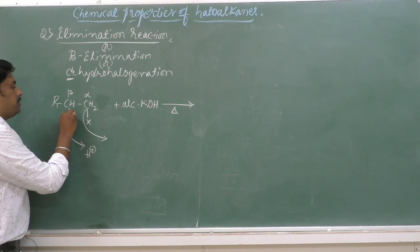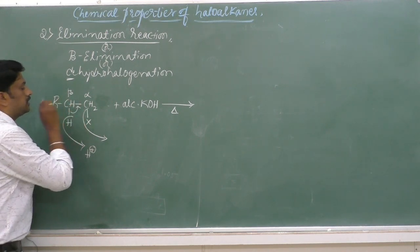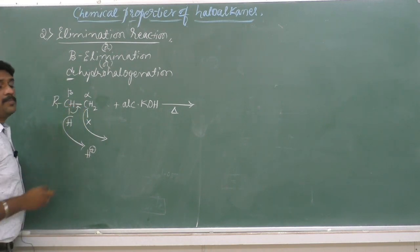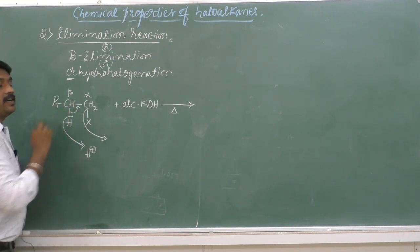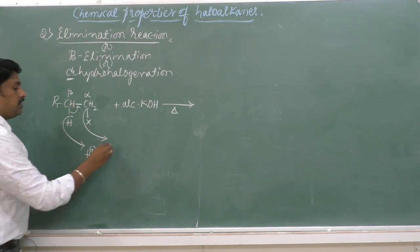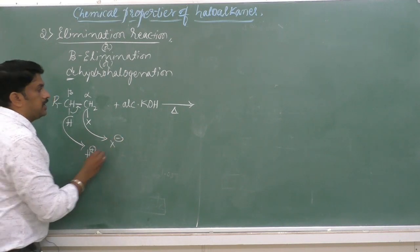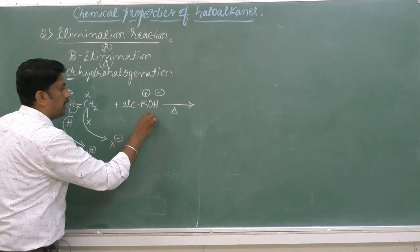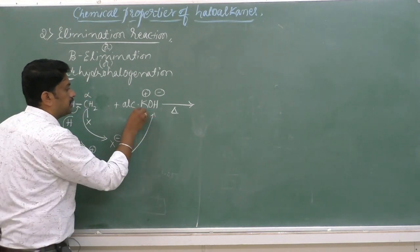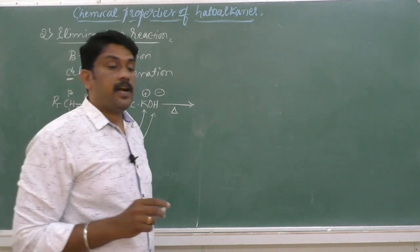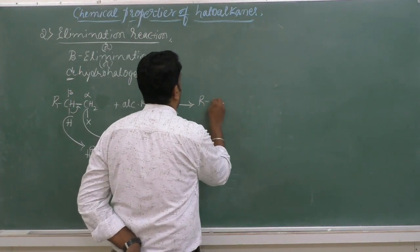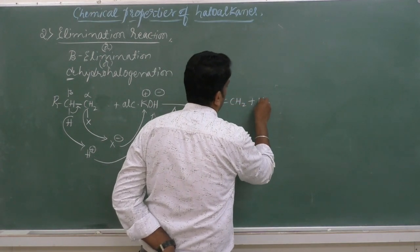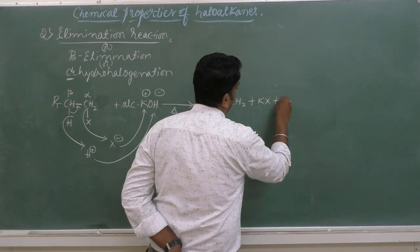The bonded pair electrons are dispersed to form a carbon-carbon double bond. The H⁺ combines with OH⁻, and X⁻ is released. This gives rise to RCH=CH₂ plus KX plus H₂O as products.